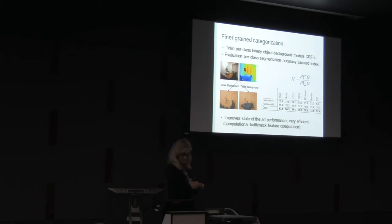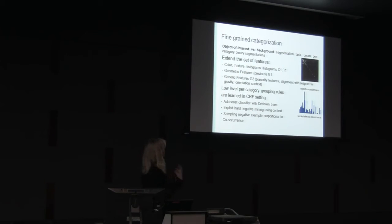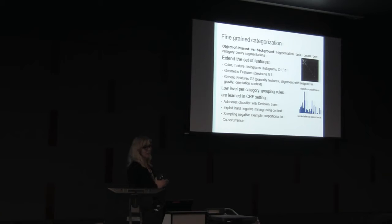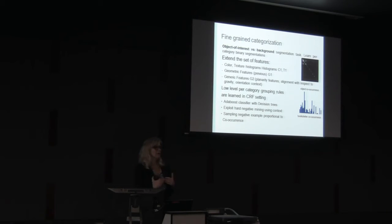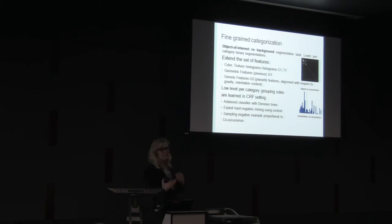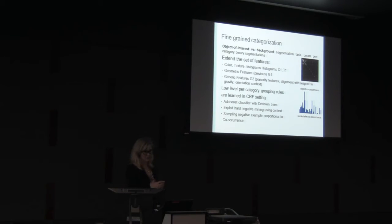We take the initial representations from the previous setting and compute more informative features, since we need more discriminative capability to disambiguate between different types of furniture. Instead of solving a complicated multi-class inference problem, we approached it by designing many simple binary segmentation tasks applied in a sequential setting. This affords some modularity which can be invoked depending on task constraints. These inexpensive binary recognition and segmentation tasks can be trained very efficiently, and we can exploit coherent constraints between different object categories.